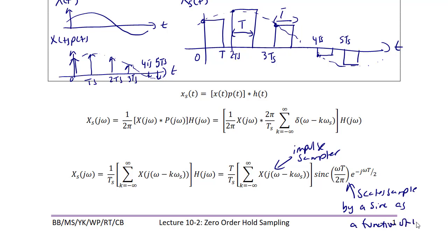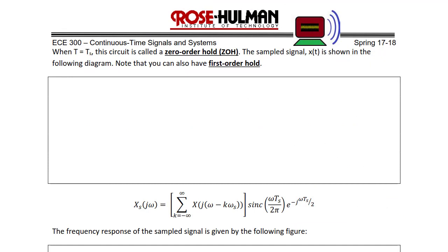This is different from the pulse sampler because for the pulse sampler, the sinc varies the amplitude of the copies. For the zero order hold, the sinc actually distorts the copies based upon the value of the sinc at ω. When T equals TS, the circuit is called a zero-order hold.